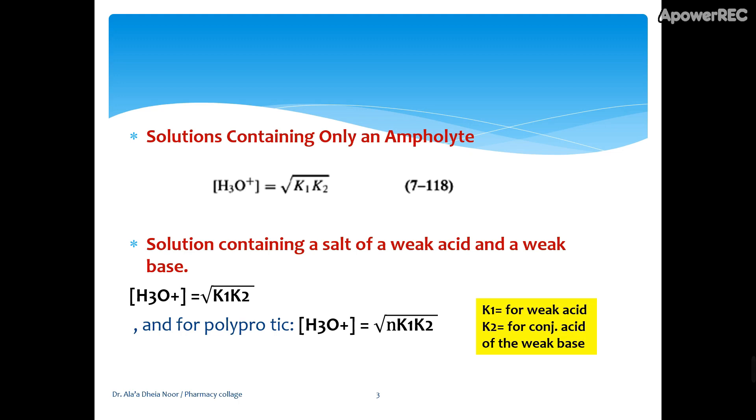Now if we have a solution containing an amphilyte, we know that amphilytes can act as acid and as base, so we have Ka1 and Ka2. Like we have Ka forward and Ka reverse, we have two constants.